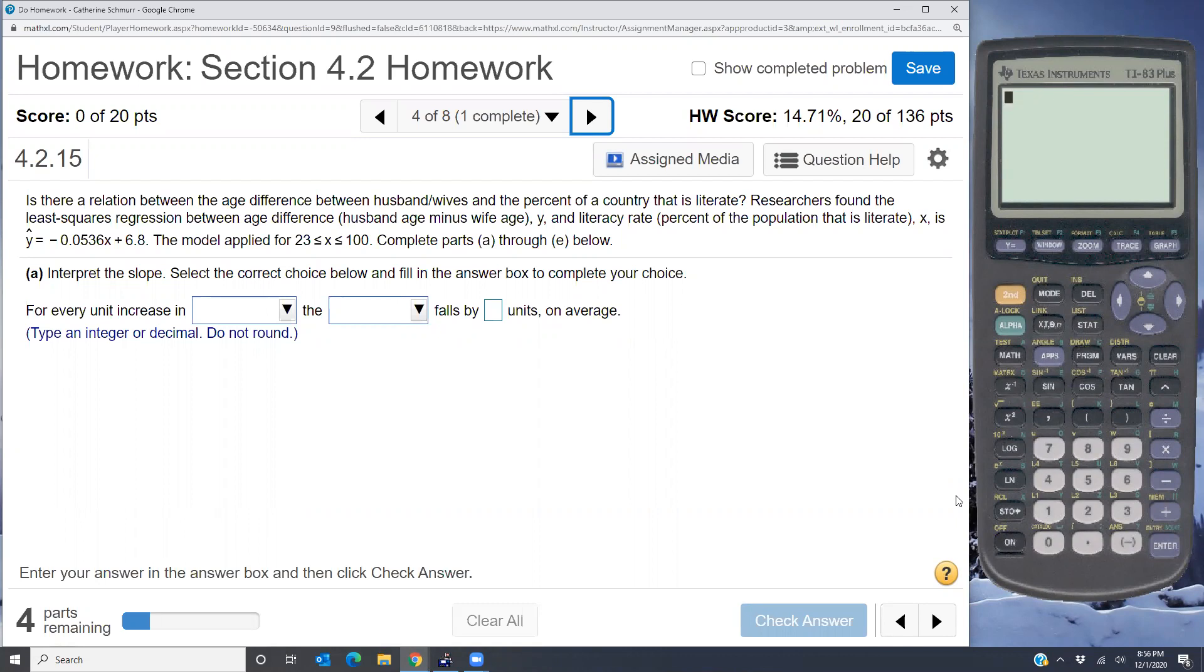Researchers found the least squares regression between age difference, which is husband age minus wife age. So we're saying that the age difference is y, and the literacy rate, the percent of the population that's literate or that can read x, is y equals negative 0.0536x plus 6.8.